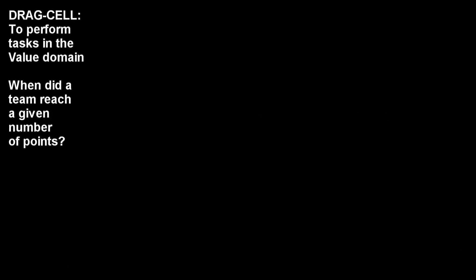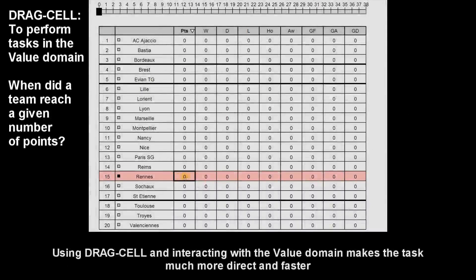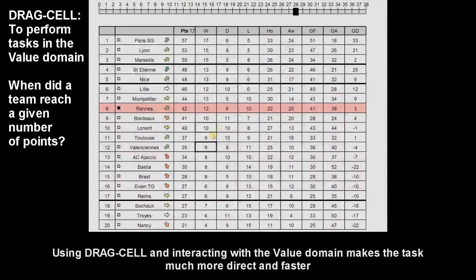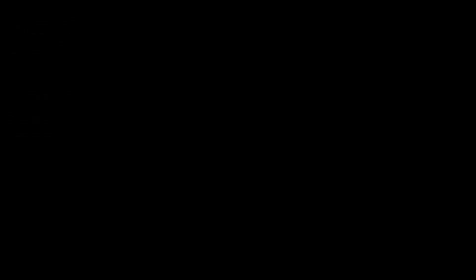When did a team reach the number of points to be safe from being downgraded to the minor league? Using DragCell, the user interacts directly with the value domain to perform the task, making the interaction more direct and faster.